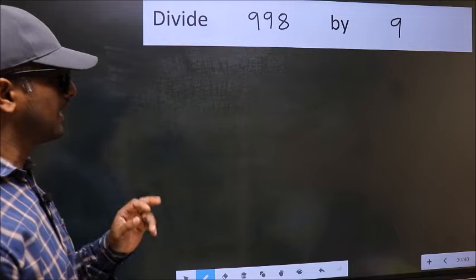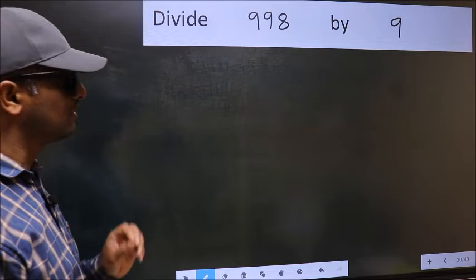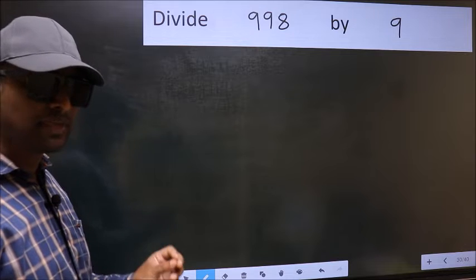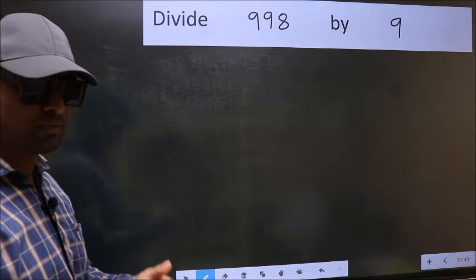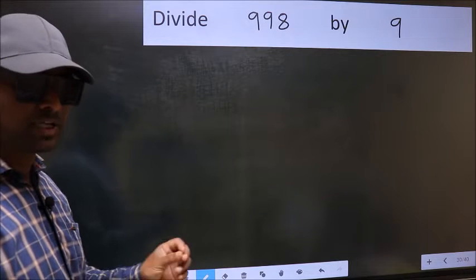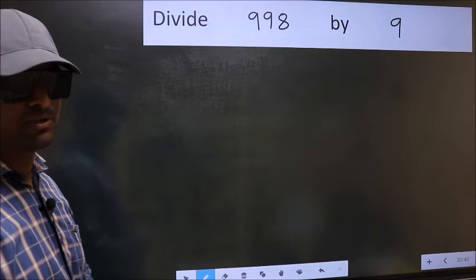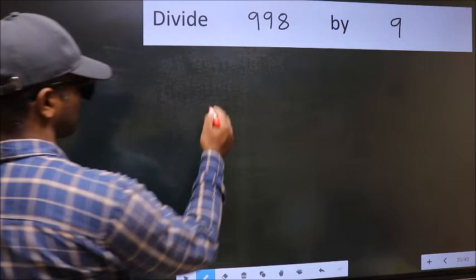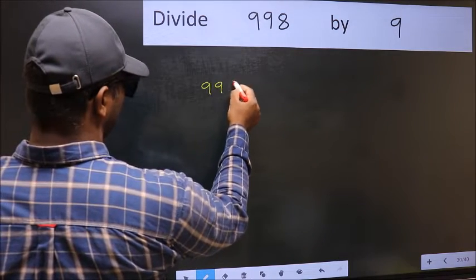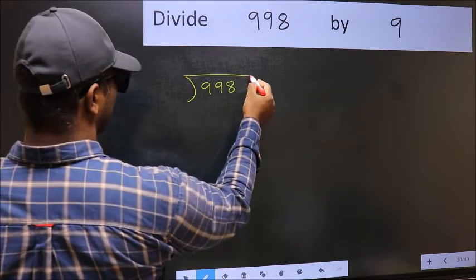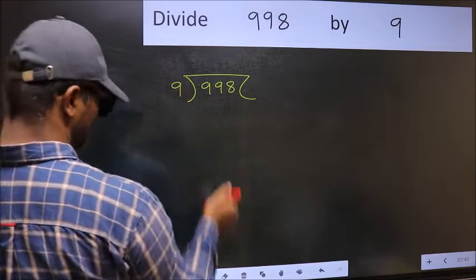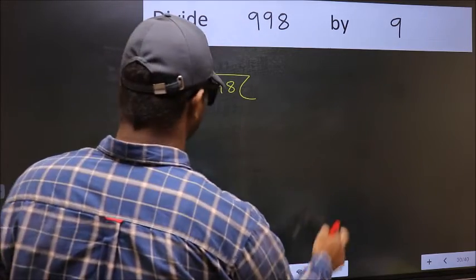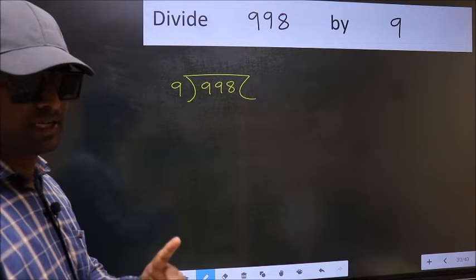Divide 998 by 9. While doing this division, many do this mistake. What is the mistake that they do? I will let you know. But before that, we should frame it in this way. Okay. 998 and 9 here. This is your step 1.